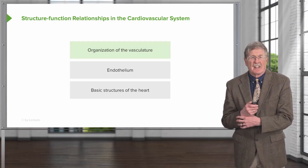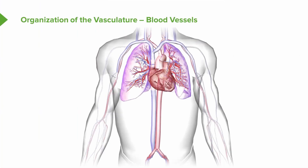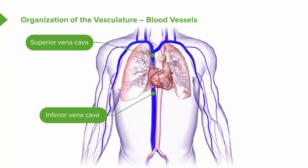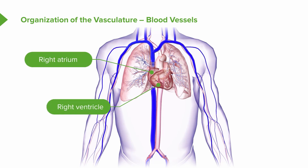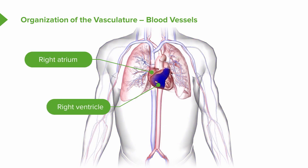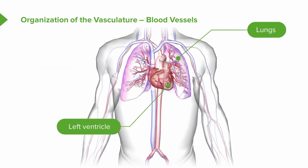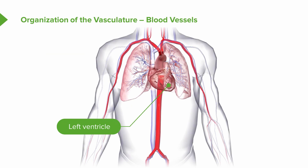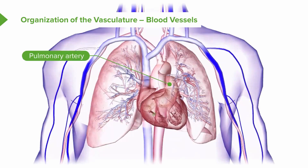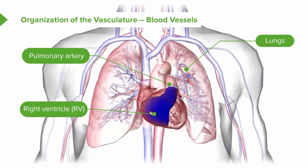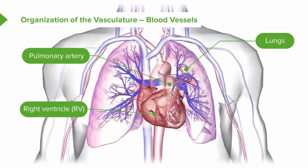First up is the organization of the vasculature. We're seeing here a fairly complex picture with the beating heart centrally, as it should be. Blood comes in from the superior and inferior vena cava, bringing blood back from the entire body into the right atrium, the right ventricle, and eventually it gets pumped out to the lungs, and then returns from the lungs to the left ventricle and out the aorta.